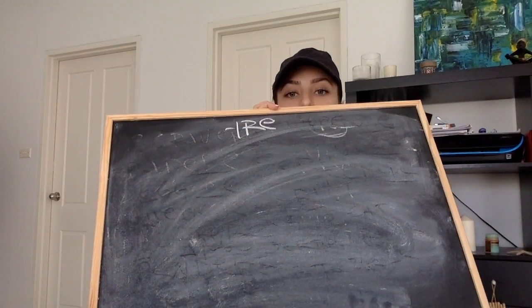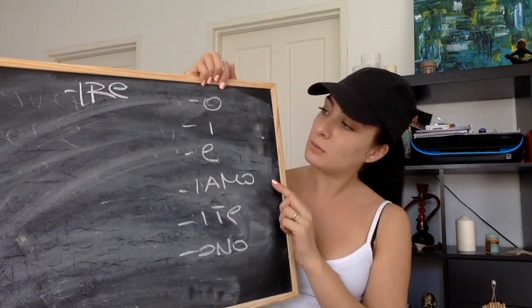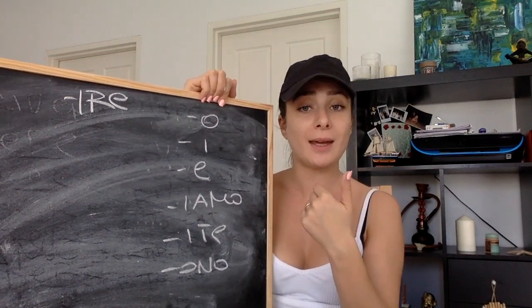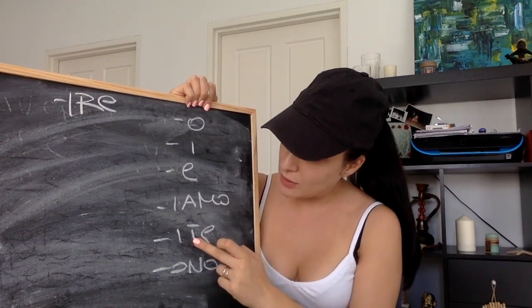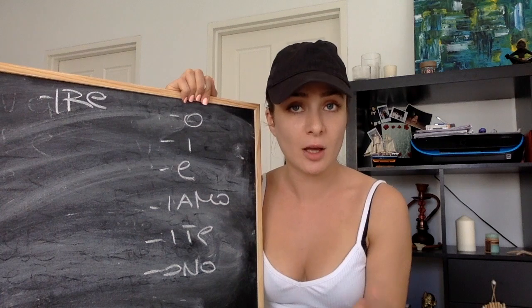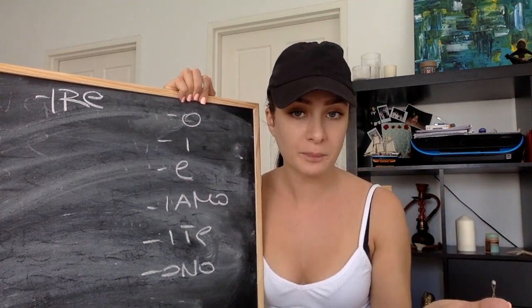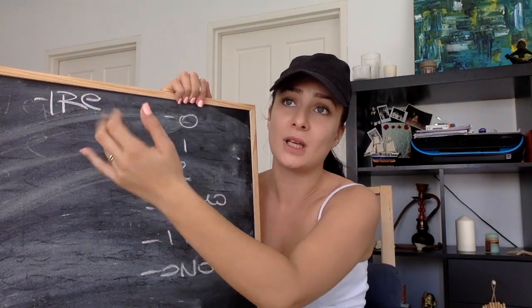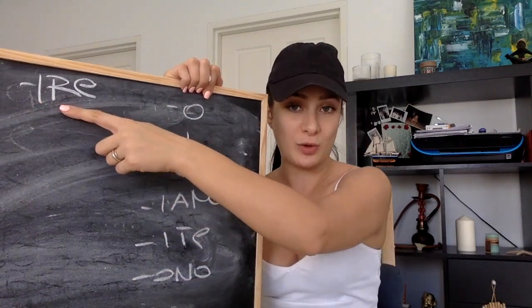Now regarding the last group of verbs — the ones ending in -ire. I'm going to write the endings of the -ire conjugation down and then explain the rest. The difference between -ire and -ere is basically just this one ending — for 'voi', -ere gives 'scrivete' while -ire gives '-ite'. It's easily guessable because of the -ire ending of the verb.